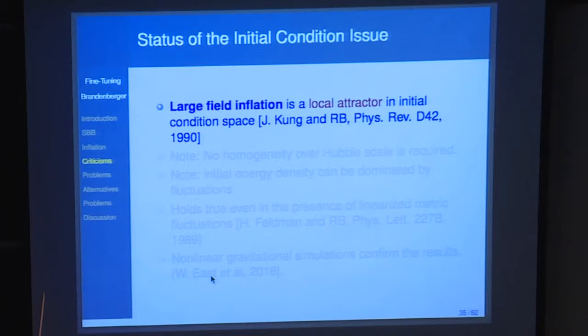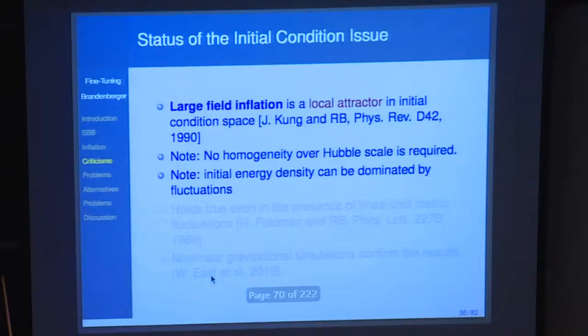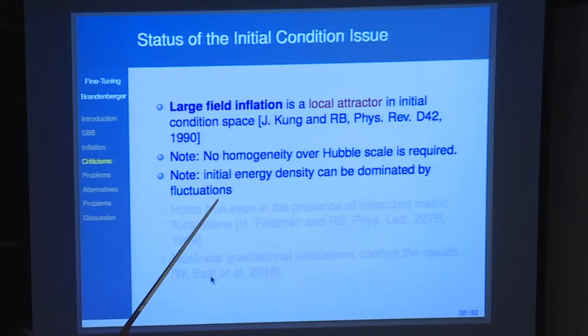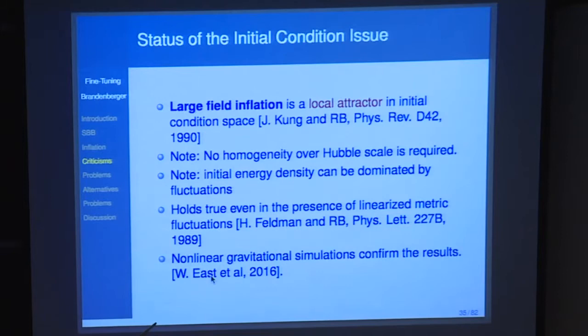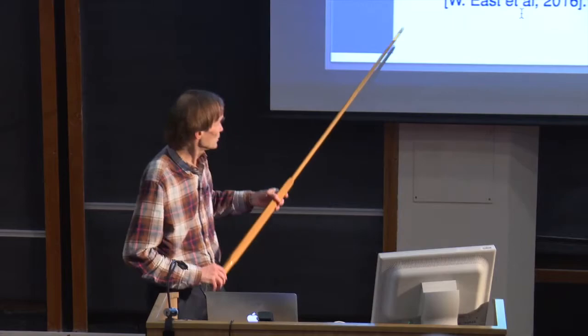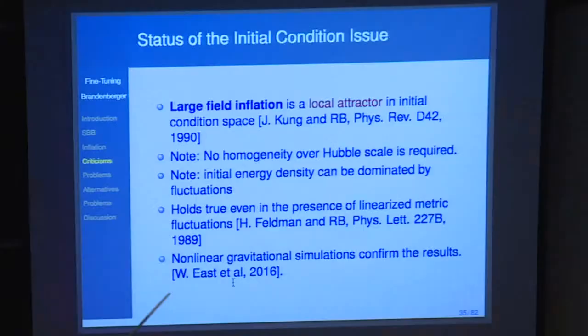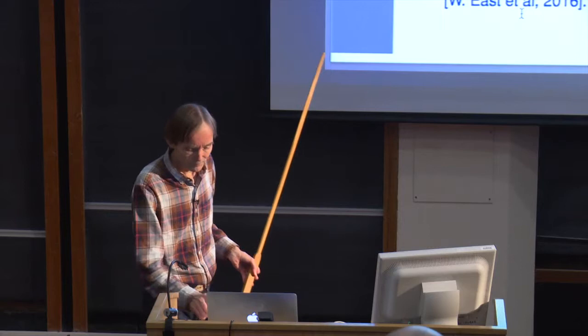Large field inflation is a local attractor in initial condition space. In particular, no homogeneity over a Hubble scale is required. You can start with initial conditions where most of the energy is in inhomogeneities. Recently, this has been addressed with full numerical relativity codes by two independent collaborations: William East and collaborators, and Eugene Lim at King's College and collaborators — and they basically agree with these conclusions. Bottom line: in terms of initial conditions, large field inflation is actually a very good scenario.